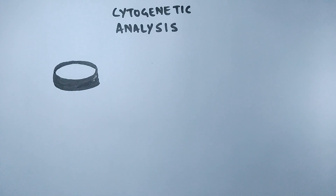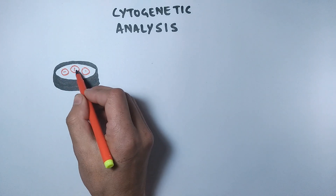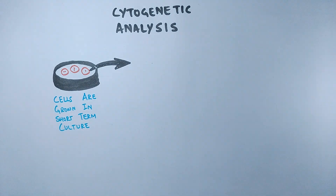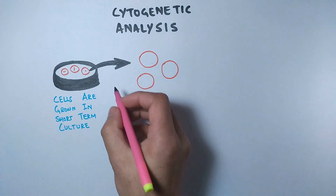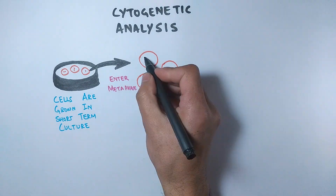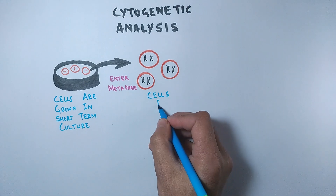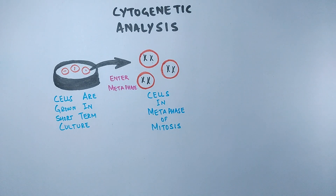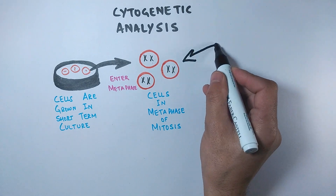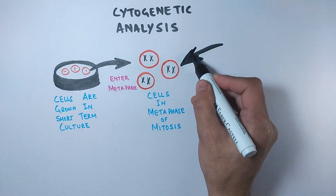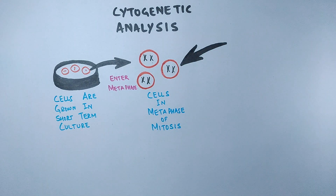In this technique the cells are first grown in a short-term culture under in vitro conditions. Then these cells enter the metaphase of mitosis, and it is here where we work. The metaphase chromosomes are stained, but cells will continue to grow further and can complete the cell cycle, meaning metaphase will progress into anaphase and so on.